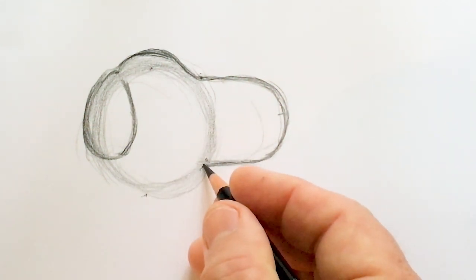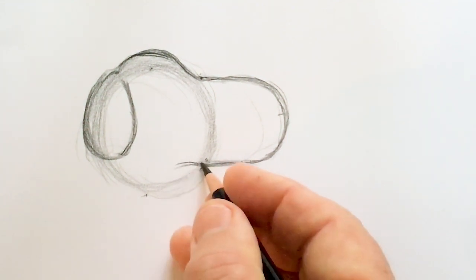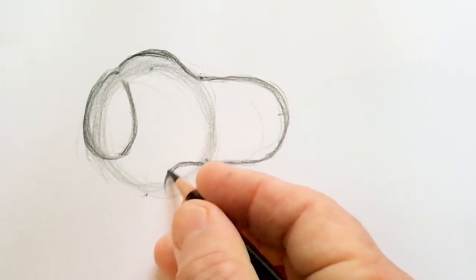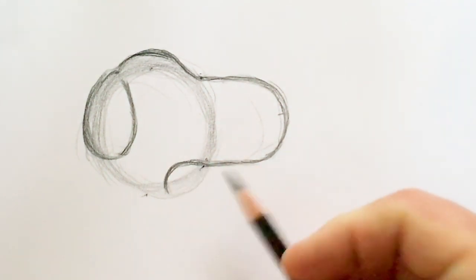Right where that snout is touching the bottom of our circle here, I'm going to curve in and down. That will be the front of the neck here, gang.